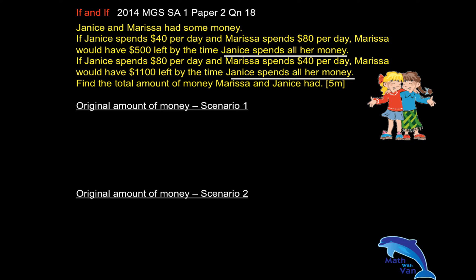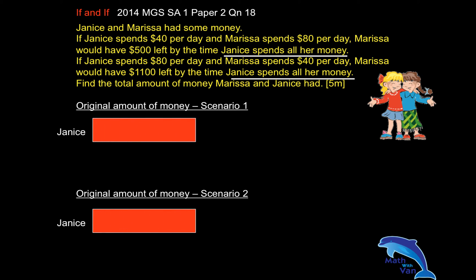Analyzing Scenario 1: if Jenny spends $40 per day and Marissa spends $80 per day, it's as good as telling us that given the same number of days, Marissa would have spent double what Jenny spent. So if Jenny spent one red block, and we're told she spent all her money in both scenarios, I can put in a red block in Scenario 2 as well. Going back to Scenario 1, Marissa spent double, so Marissa should have two red blocks.